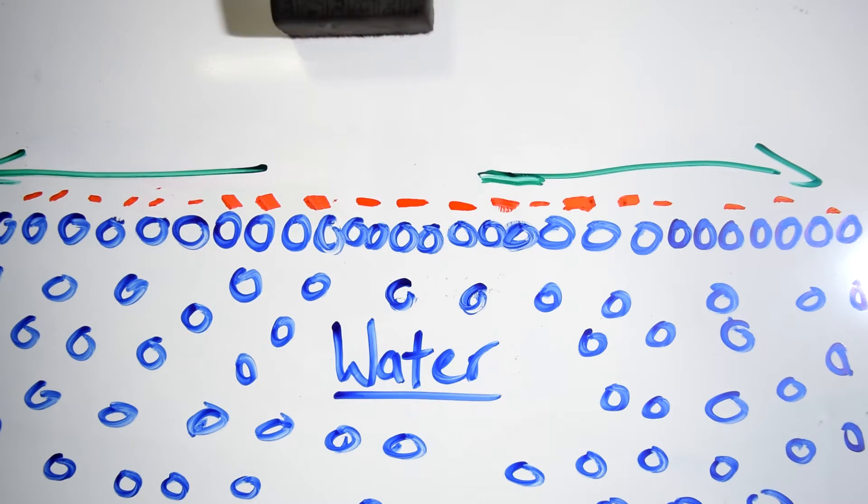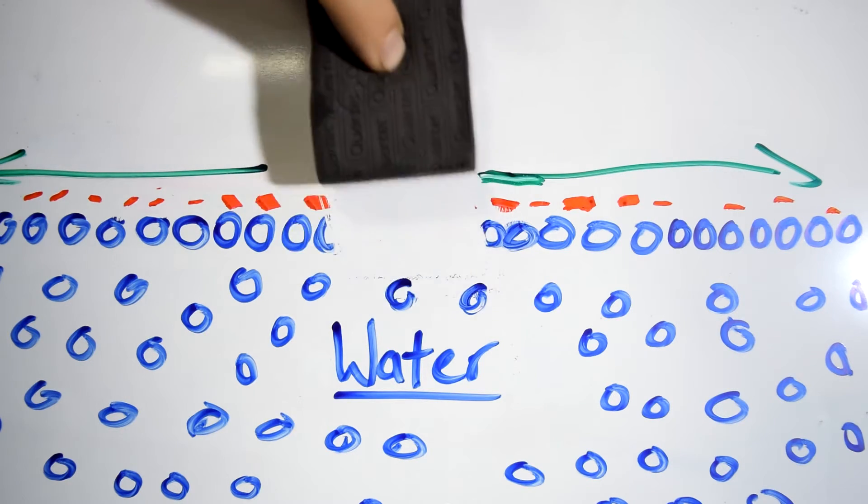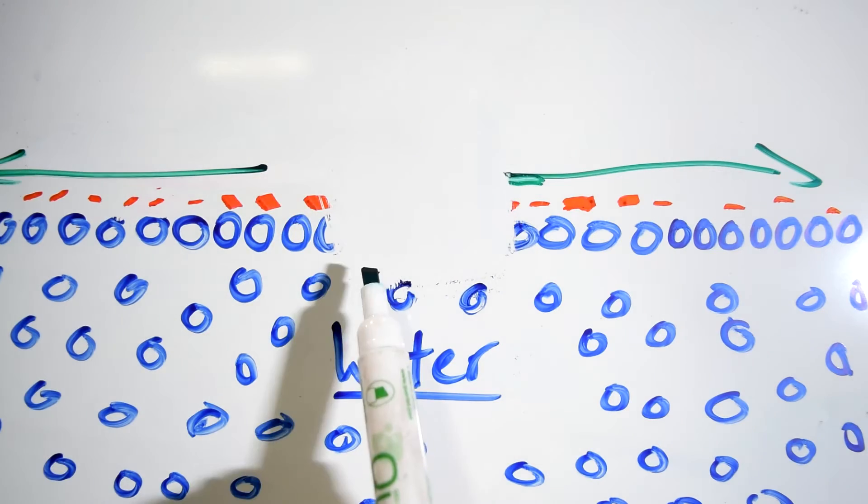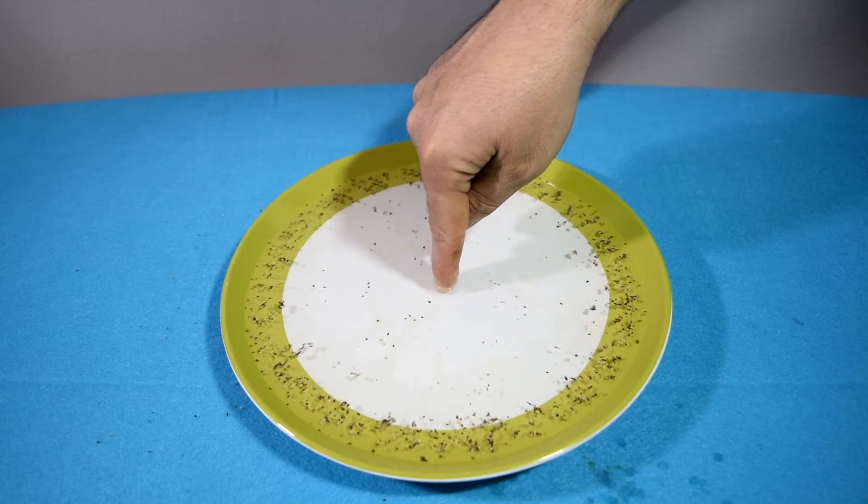Now in our trick, when we use dish soap, we basically ruptured the surface tension, and when we did this the water molecules pulled away, carrying with them the pepper that was laying on top of them.